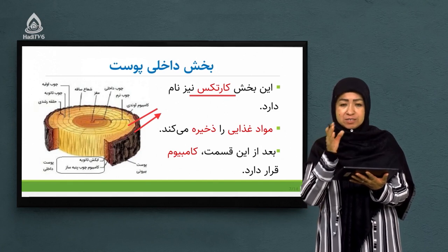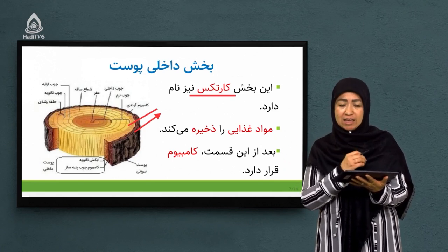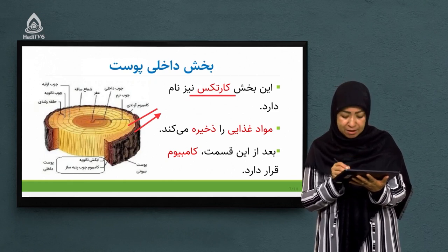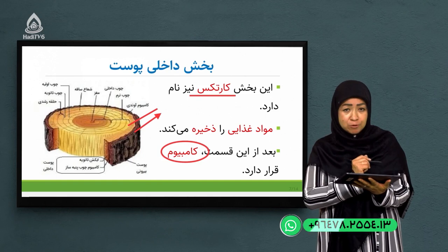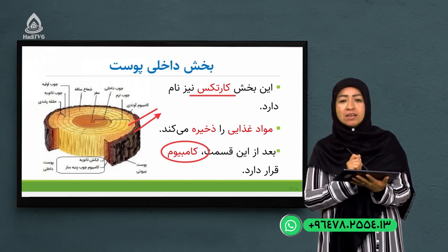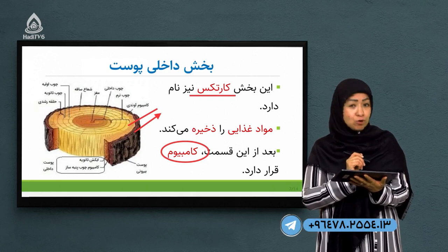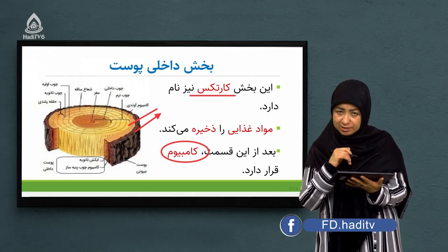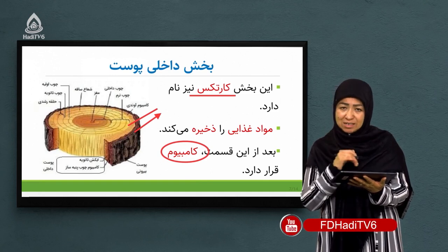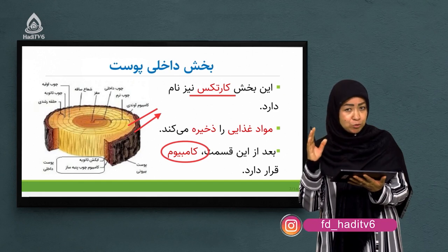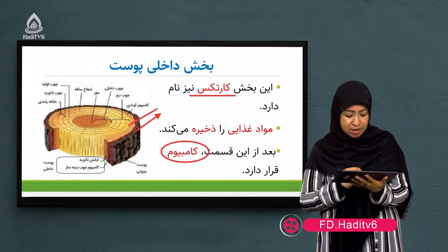کارتکس یک قسمت حد فاصل است بین بخش خارجی پوست و یک لایه یا حلقه از انساج بسیار مهم و زنده به نام کامبیوم. آن دایره‌هایی که در اسلاید قبلی نشان دادم توسط همین لایه کامبیوم به وجود می‌آید. پوست درختان دو لایه دارد: بخش خارجی و بخش داخلی یا کارتکس. کامبیوم درست در زیر کارتکس قرار دارد و خودش متعلق به انساج پوست نیست.